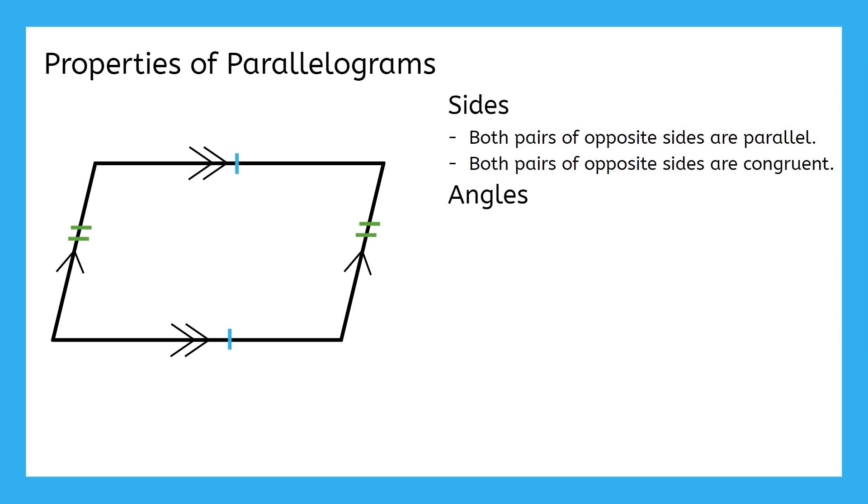We also know that parallel lines give us lots of information about angles, so there are some properties of parallelograms that tell us about their interior angles too. To focus on angles, I'm going to get rid of my side congruence marks just to clean up my picture. And, I'll also add in labels for my four interior angles so that we can talk about them more easily. If we focus on the parallel lines on the top and bottom and use the right side as a transversal, here's what we see.